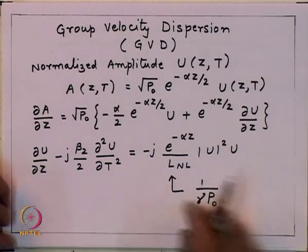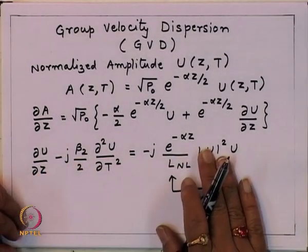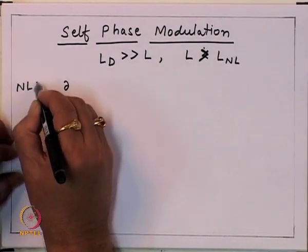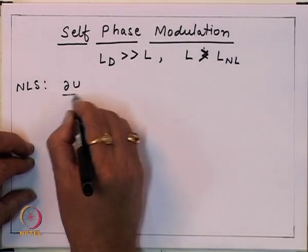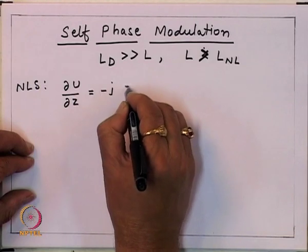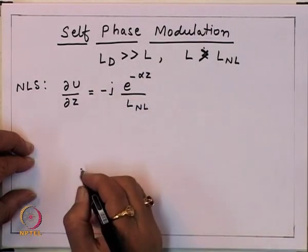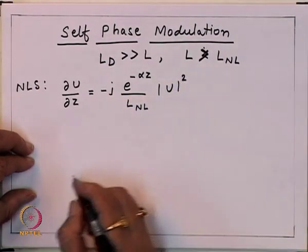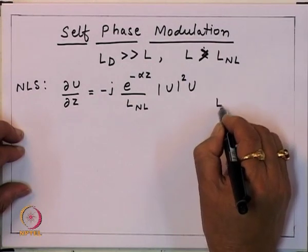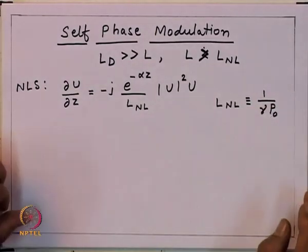Since dispersion is not playing a role, the dispersion term in the equation is negligibly small, so we have only the propagation term and the non-linearity term. The NLSE can then be written as du/dz = −j·exp(−αz)/L_NL · |u|² · u, where L_NL is defined as 1/(γP₀), with P₀ being the power inside the optical pulse.